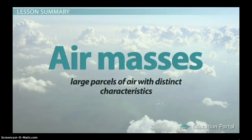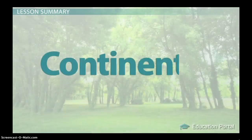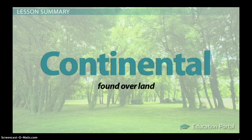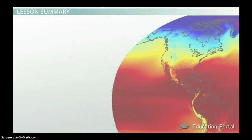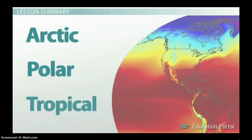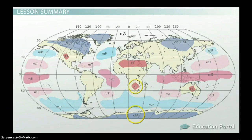Air masses are large parcels of air with distinct characteristics that occur all over Earth. They're classified based on where they're found: continental air masses are found over land, like the continents, and maritime air masses are found over water, like marine environments. We can also classify air masses based on their source region — Arctic, Polar, or Tropical. When these two classifications are combined, we get very specific descriptions of the type of air and weather produced. Continental air masses produce dry conditions, while maritime air masses produce wet conditions because they draw water from the oceans they blow over.